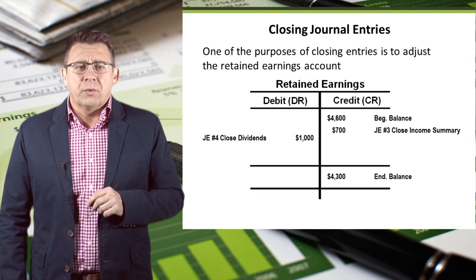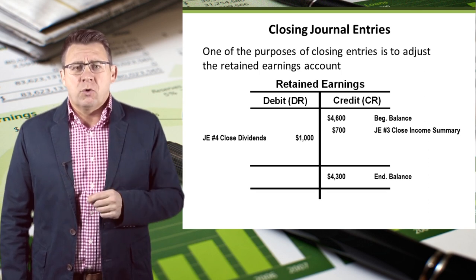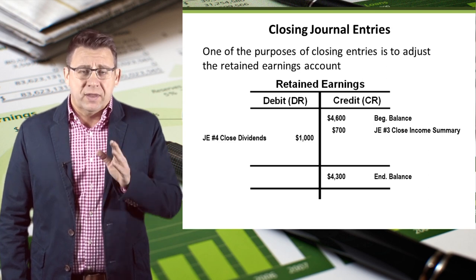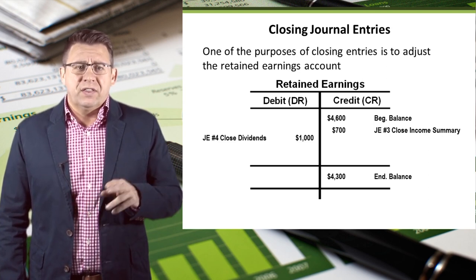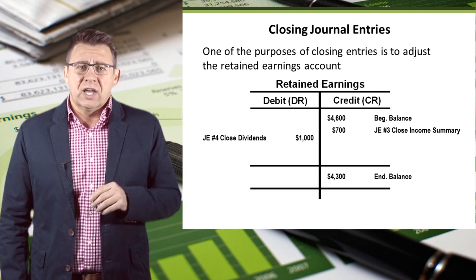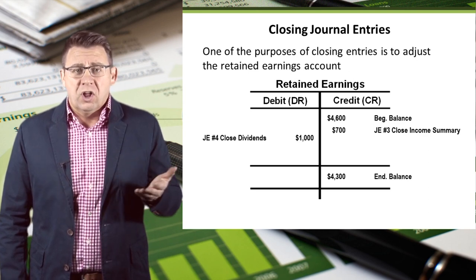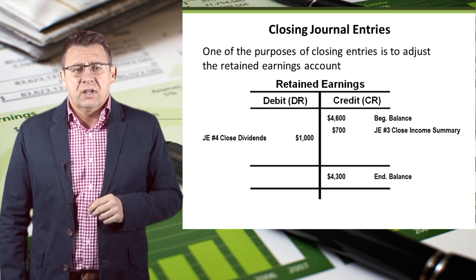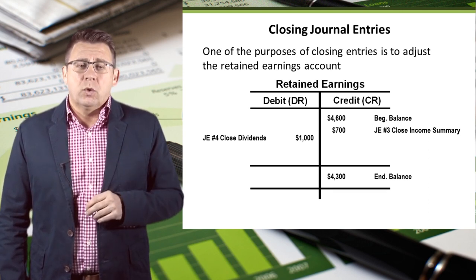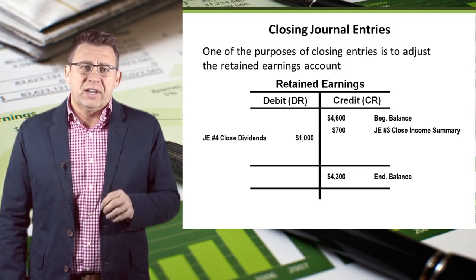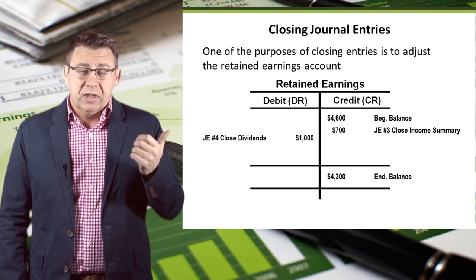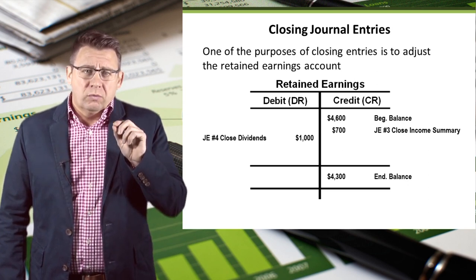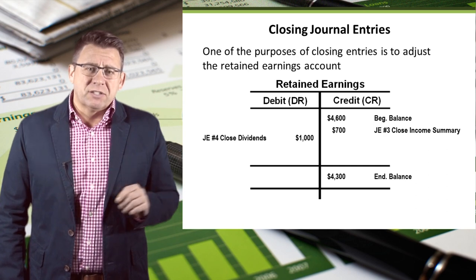Now let's look at our retained earnings account. We started with a $4,600 credit balance, which came from the trial balance. We increased the account when we closed income summary — recall that net income increases equity, and this journal entry is how that happens. We decreased the account when we closed dividends — recall that dividends decrease equity, and this journal entry is how that happens. Then we have an ending balance of $4,300.